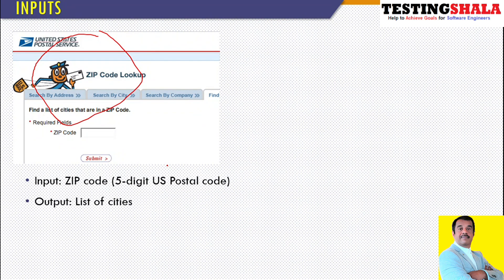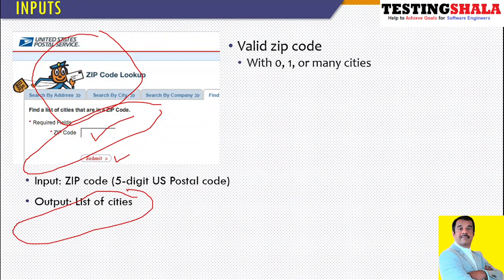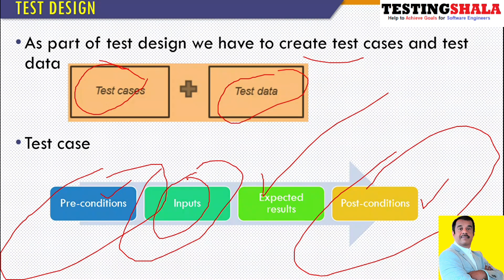Let's take an example: the United States Postal Service web application where we want to test zip codes. We provide various combinations of zip codes and submit — we should get the location or cities for that zip code. Valid zip codes we can give include zero, one, or multiple cities' codes. Invalid ones include empty, one to four characters, six characters, or very long strings — since a valid zip code is a five-digit US postal code.